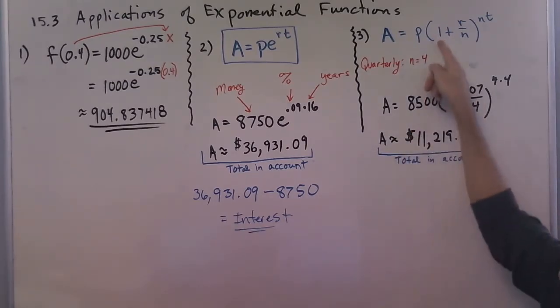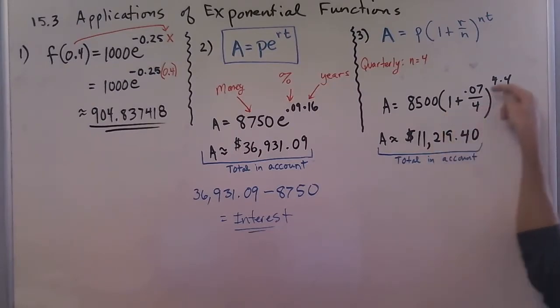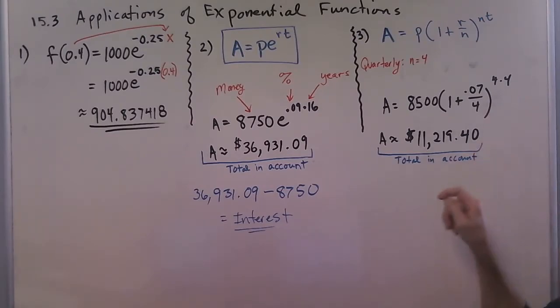The principal, this one is part of the formula, then we have the rate, 7% compounded quarterly for four years. I don't like this problem too well because we repeat the 4 here, but this 4 right here actually stands for years, and this is because of quarterly.